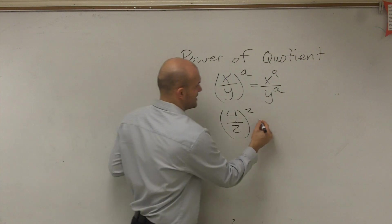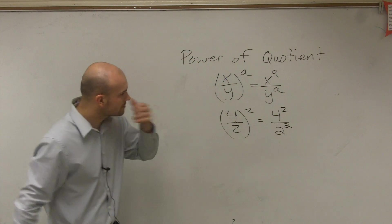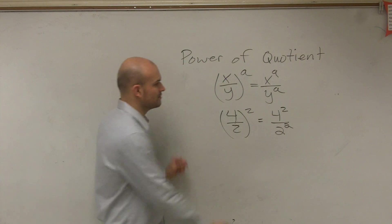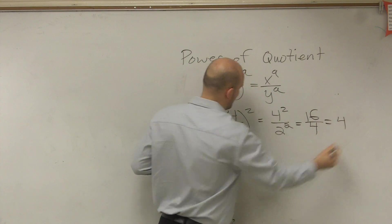All that simply means is we're going to have four squared over two squared. Well, when you look at this, four squared, which is going to be 16 over four, which equals four.